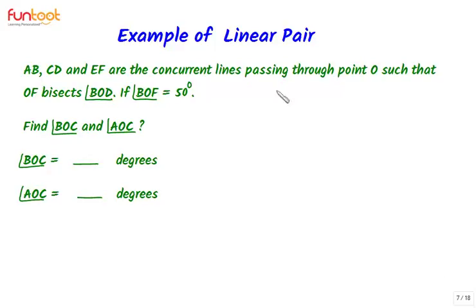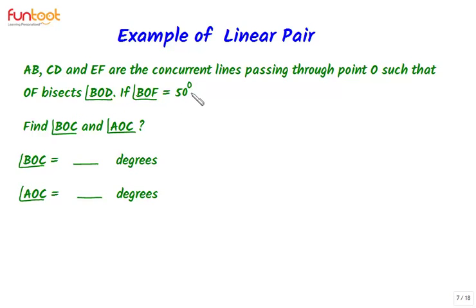Let's do an example on the concept of linear pair. So here is our example. A, B, C, D, E, F are concurrent lines passing through point O such that OF bisects angle BOD. If angle BOF is 50 degrees, find angle BOC and angle AOC. For solving this question, let's first draw its figure.